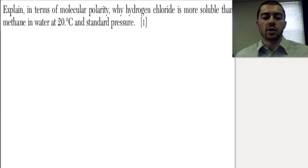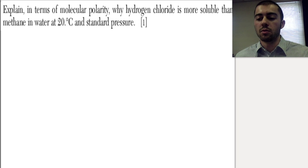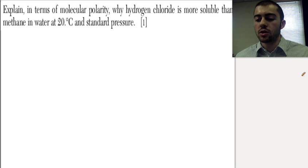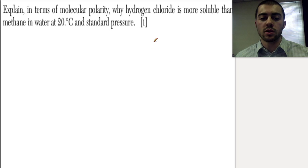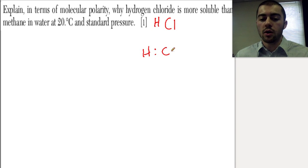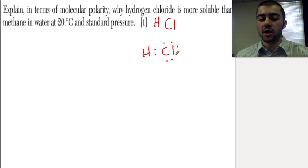Looking at a Regents question: explain in terms of polarity why hydrogen chloride is more soluble than methane in water at standard pressure and temperature. We need to look at the intermolecular forces, so we have to look at the polarity of those molecules. Hydrogen chloride is just HCl. If we draw a Lewis structure, it's hydrogen bonded to chlorine. This is going to be a very polar substance because chlorine is very electronegative and hydrogen is not, creating a negative end and a positive end.